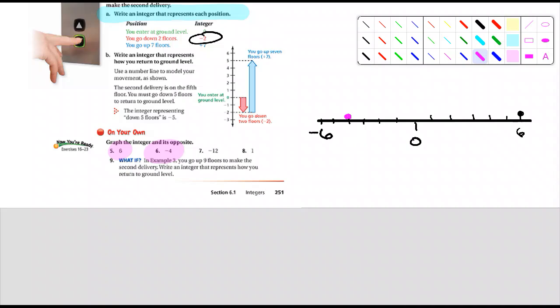All right. Number 7. If I was to graph negative 12, I would graph it. Put a negative 12 on the graph. It would be 12 spaces to the left of 0. And then the opposite would be 12 spaces to the right of 0. From 0. From 0.